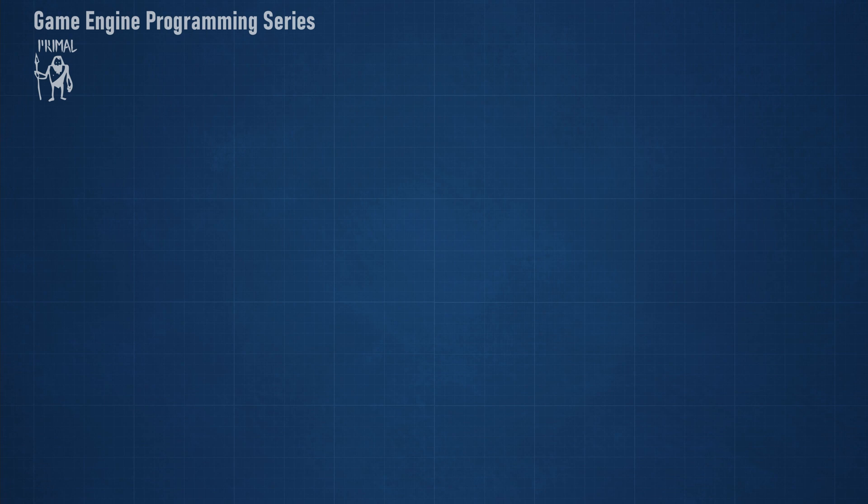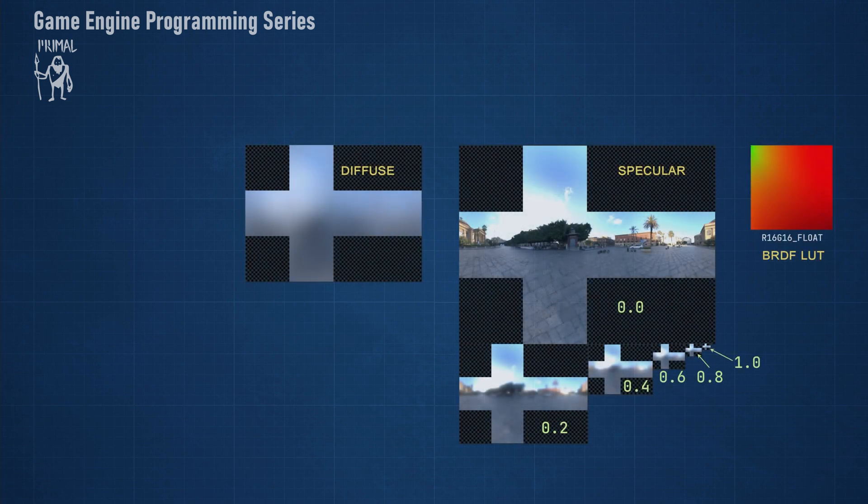So now we have pre-filtered the original cube map, which resulted in three parts. The diffuse pre-filtered, specular pre-filtered and the BRDF integration lookup textures.